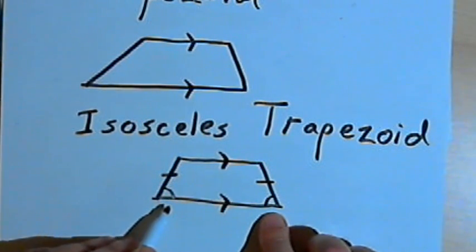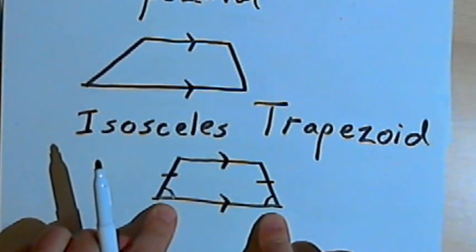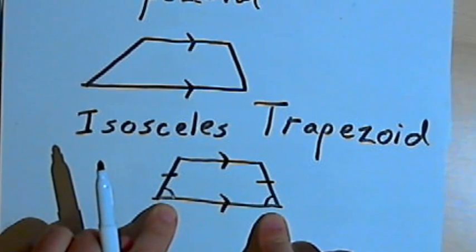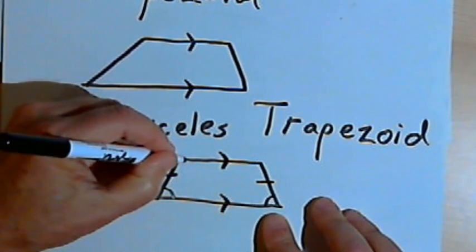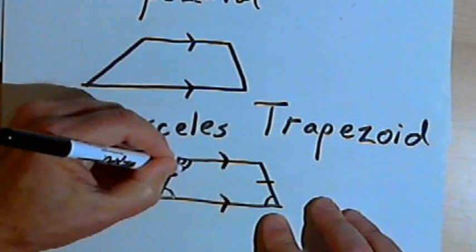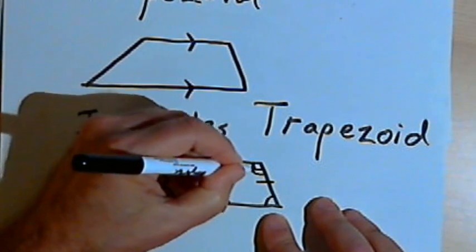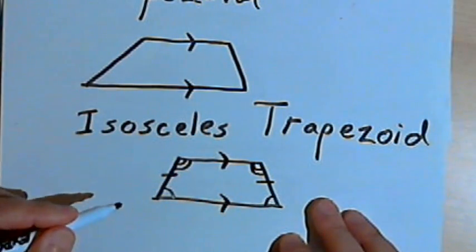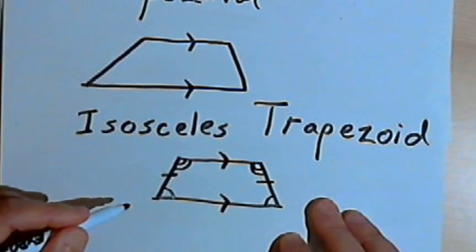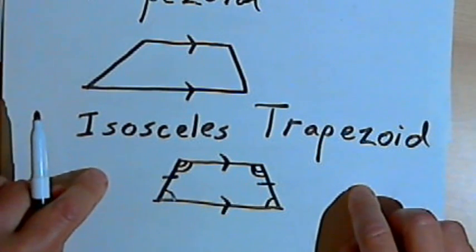Both of the base angles — there's a pair of base angles — are going to be equal to each other, or congruent. And then there's going to be another pair of base angles that are also congruent to each other. So that's your isosceles trapezoid.